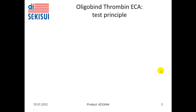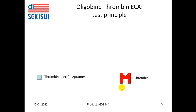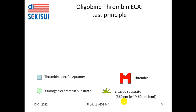What is the test principle of the Oligobind Thrombin assay? First, there is a thrombin-specific aptamer, which is an oligonucleotide specific for thrombin. Second, there is thrombin in the sample. There is a fluorogenic thrombin substrate, and there is a cleavage product of the substrate, which is fluorescent.